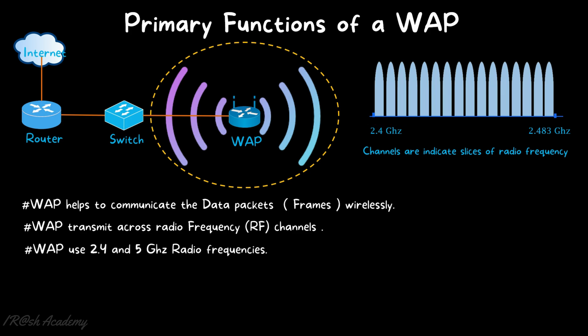Point number three: wireless access points use 2.4 and 5 GHz radio frequencies. Radio frequencies have different ranges, and depending on the purpose, frequencies are restricted to specific usages. Other radio frequencies are used for radio communication, satellite communication, and military operations. The only allowed range for wireless access points is 2.4 and 5 GHz.